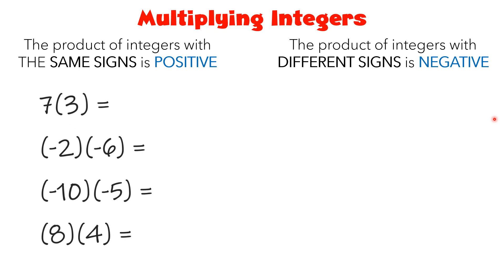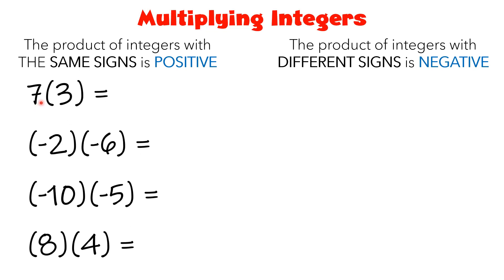Let's have an example. First one: 7 times 3. They are both positive. Since they have the same sign, your answer must also be positive. So 7 times 3 is equal to positive 21.